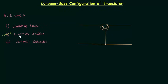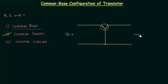In this lecture I will explain common base configuration. In common base configuration, the base is common to the input and output circuit. This side is the input side and this side is the output side.